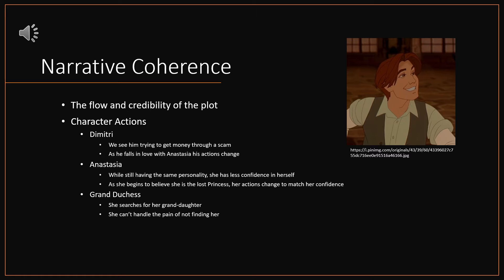As Dimitri falls in love with Anastasia, his actions change from being willing to do the scam to wanting to help her. This is something we find credibility in because it continues to support the plot without going against the character. We can also see this in Anastasia — she still had the same personality after losing her memory, but she has less confidence in herself after leaving the orphanage, and we can see that confidence grow as the story progresses. Because she is the main character, she has the most character development, and her actions and confidence level continue to match that.